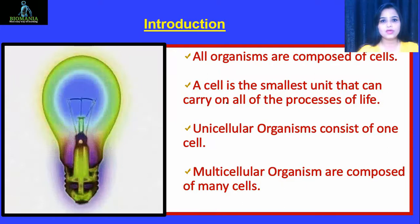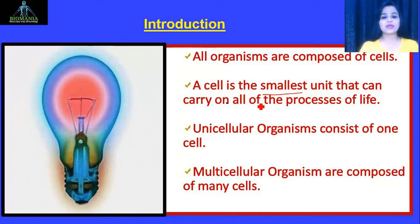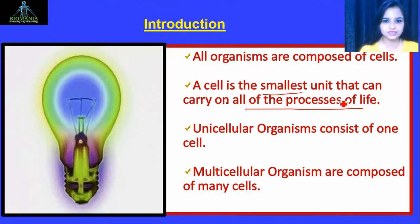All organisms are composed of cells — without cells, no organism can form. It can be unicellular, multicellular, or any type. A cell is the smallest unit which has the capacity to perform all the functions important for life, or in other words, carry on all the processes of life.